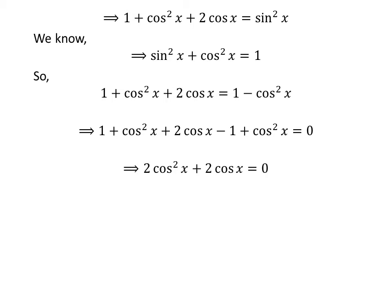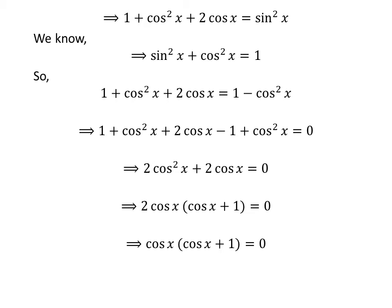Adding and subtracting like terms gives us 2 times cos squared of x plus 2 times cos of x is equal to 0. Taking out the common factor gives us 2 times cos of x times cos of x plus 1 is equal to 0. Dividing the whole expression by 2 gives us cos of x times cos of x plus 1 is equal to 0. This implies that either cos of x is equal to 0, or cos of x plus 1 is equal to 0.